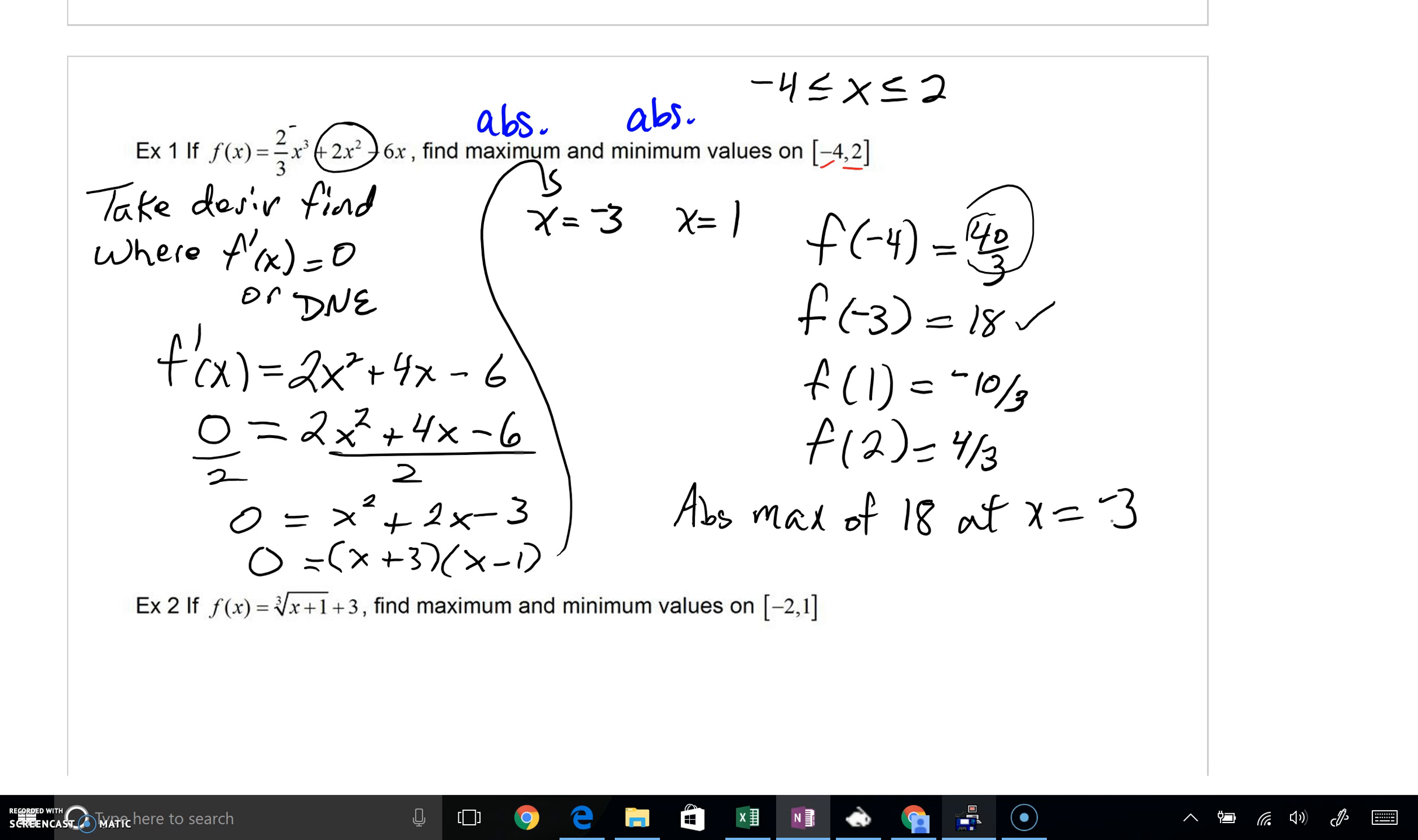We're not only stating what those extreme values are, we're also stating where they occur. The smallest y value, I think you can see, is negative 10 over 3. So we're going to say our absolute minimum is negative 10 over 3 at x equals 1. You could say absolute max is or absolute max of. It's really the same language. We're done with number 1.